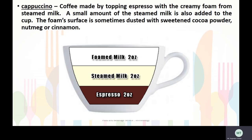The next terminology is cappuccino. Cappuccino is coffee made by topping espresso with the creamy foam from steamed milk. A small amount of steamed milk is also added to the cup. The foam surface is sometimes dusted with sweetened cocoa powder, nutmeg, or cinnamon.